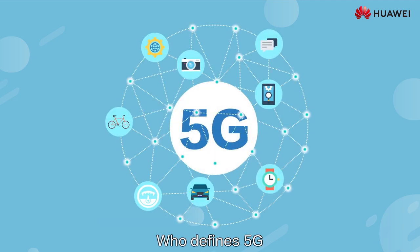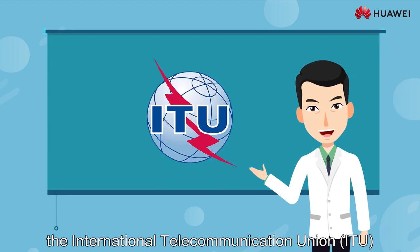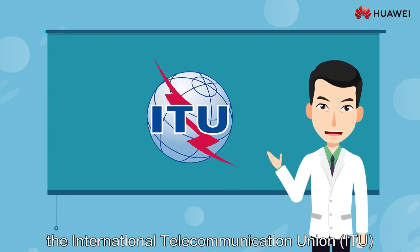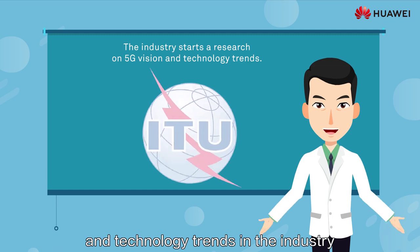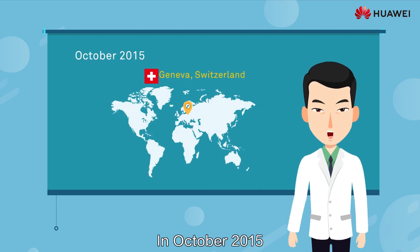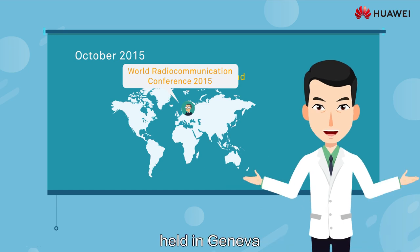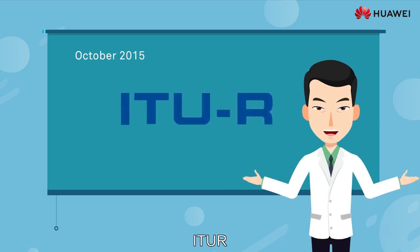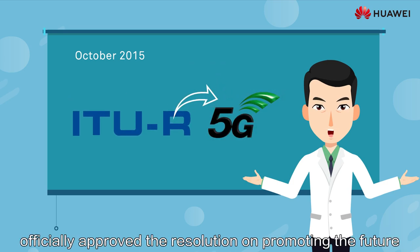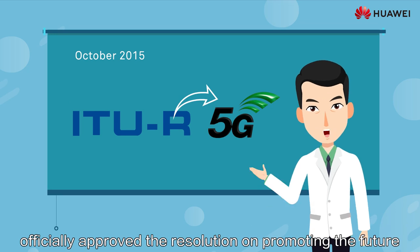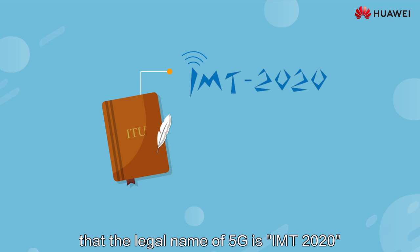Who defines 5G? Since 2012, the International Telecommunication Union (ITU) has been carrying out research on 5G vision and technology trends. In October 2015, during the World Radio Communication Conference 2015 held in Geneva, Switzerland, ITU-R, the Radio Communication Department of ITU, officially approved the resolution on promoting the future 5G research process and formally determined that the legal name of 5G is IMT-2020.